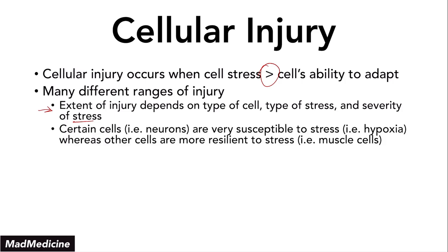Certain cells like neurons are very susceptible to stress such as hypoxia, whereas other cells are going to be more resilient, like muscle cells, because they have developed ways to adapt to stress. Neurons are vital cells — they don't have the luxury to handle stress because they're doing such important work in our body. The more resilient cells are able to step back and let the essential cells like neurons and cardiac myocytes do the work they need to do so that we can survive. Cells like neurons, which are very susceptible to stress, are unable to handle it and don't have the same adaptations as more resilient cells.